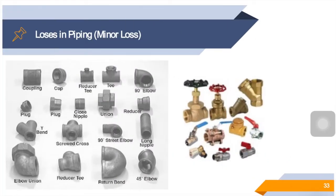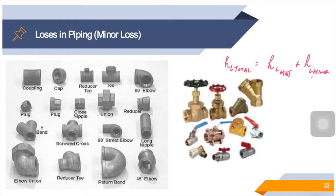We are going to move to the next section, which is minor losses. The total head loss HL total equals minor losses plus major losses. Since in the previous section we already covered how to calculate major losses, in this section we are going to move to how to calculate minor losses. Usually, the fluid in a typical piping system passes through various fittings, valves, bends, elbows,